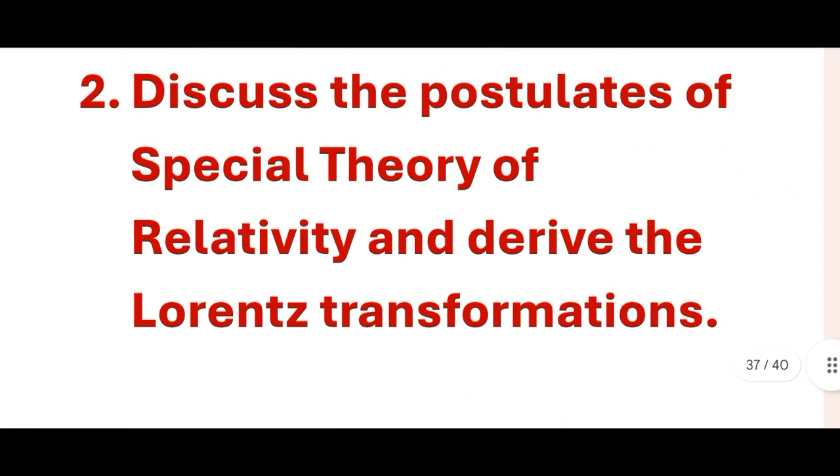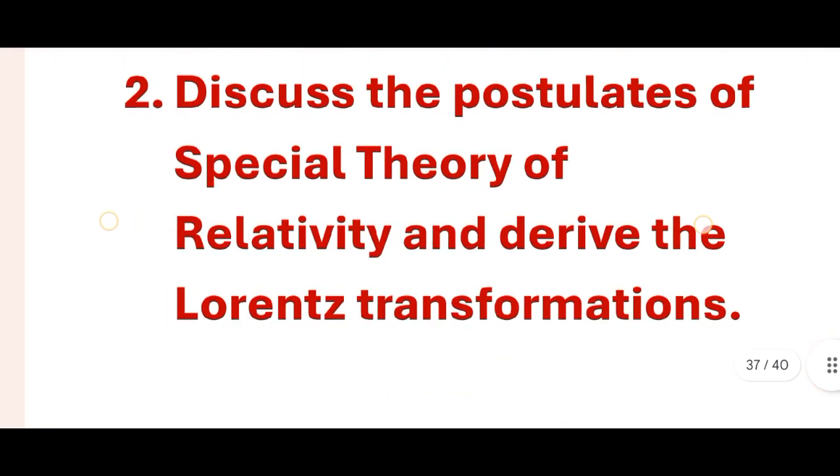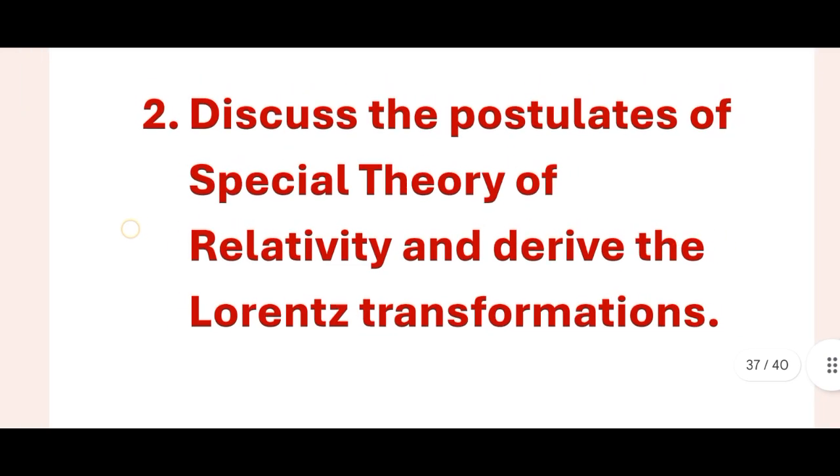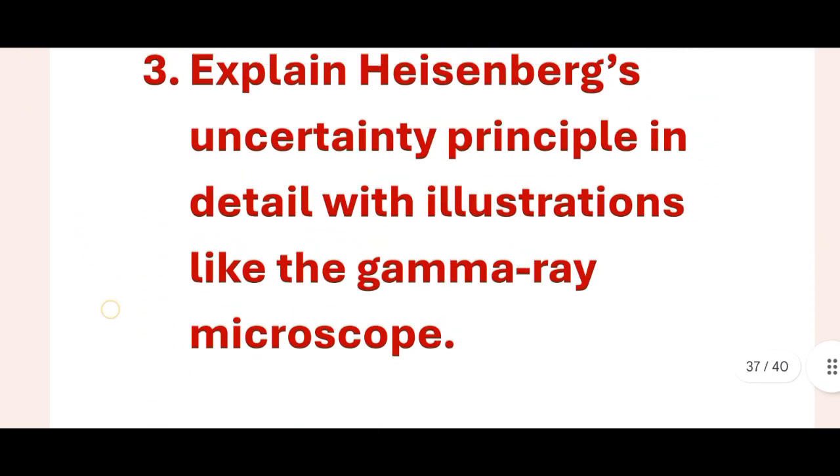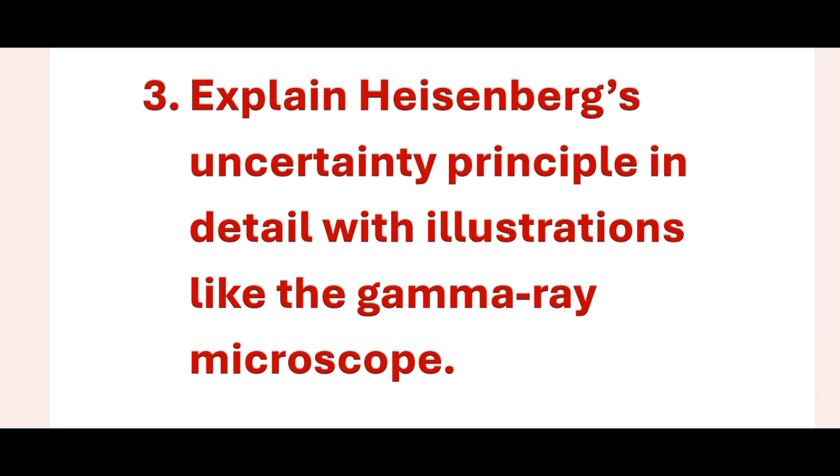Second question: Discuss the postulates of special theory of relativity and derive the Lorentz transformations. Third question: Explain the Heisenberg's uncertainty principle in detail with illustrations like the gamma ray microscope.